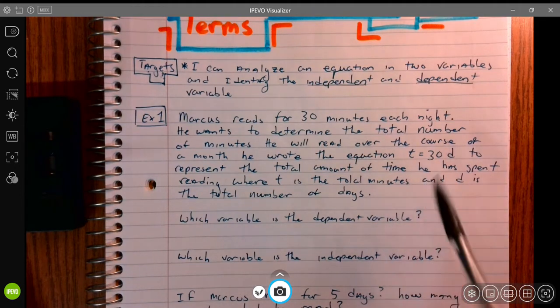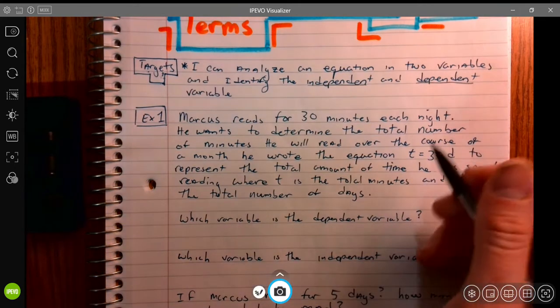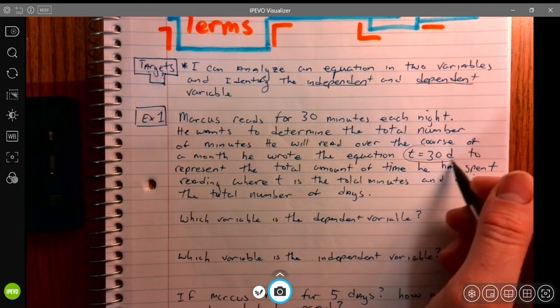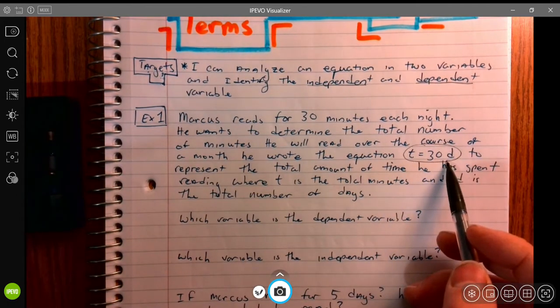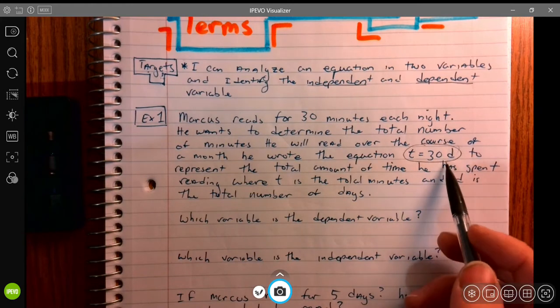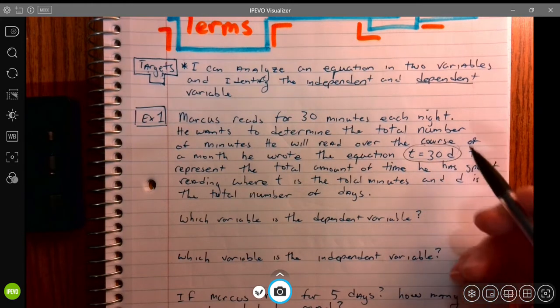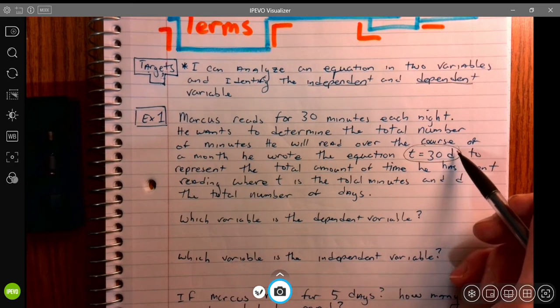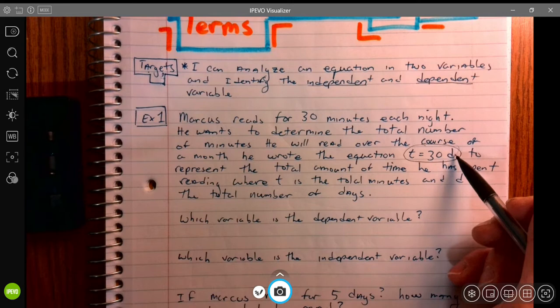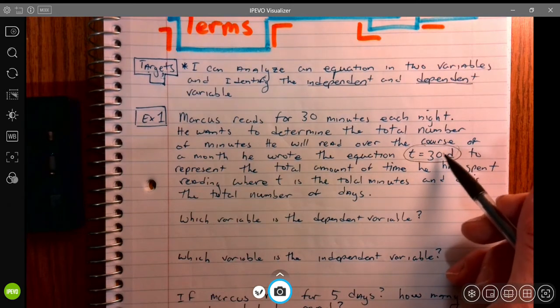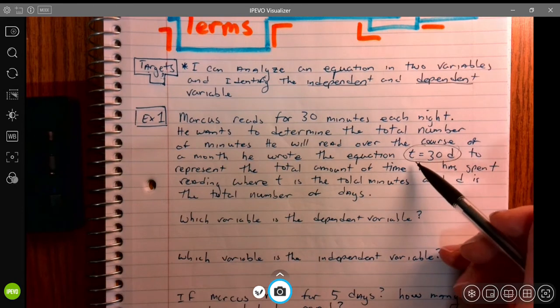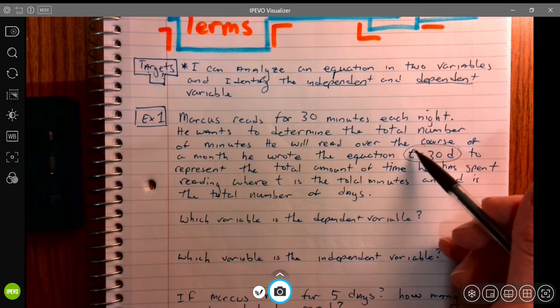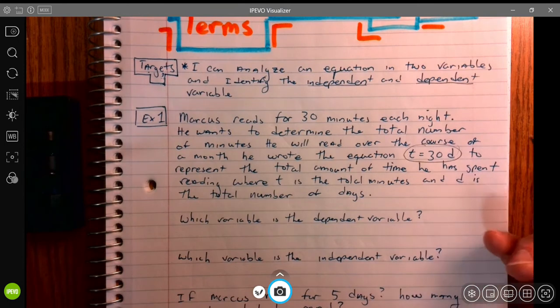So if we look at just this equation here that he's written, t equals 30 times d. So that means he reads 30 minutes a day. And so if Marcus tracks his reading time over two days, I would plug a 2 in for d. I'd say 30 times 2 is 60. So he read a total of 60 minutes over two days.